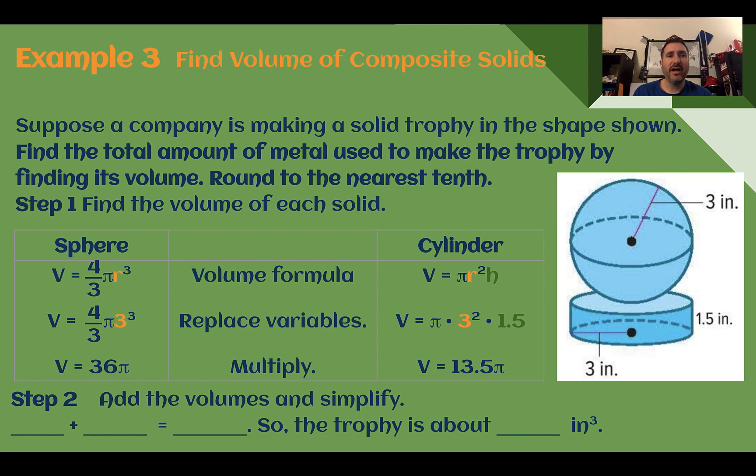Example 3, find volume of composite solids. Suppose a company is making a solid trophy in the shape shown. Find the total amount of metal used to make the trophy by finding its volume, round to the nearest tenth. So again, first let's find the volume of each solid. And this one is two of them being combined together, so we will add them at the end.